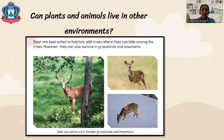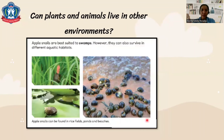For animals: deer naturally live in habitats with lots of grass, but they can also survive in grasslands or on mountains. Apple snails are best suited to swamps, but they can also survive in different aquatic habitats such as rice fields, ponds, and beaches.